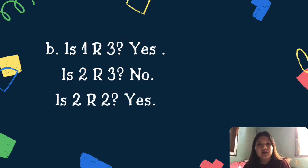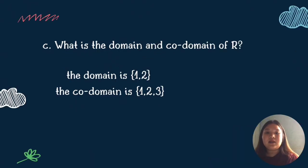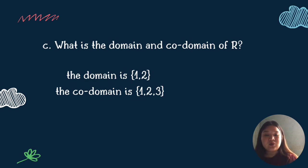Lastly, is two related to two? Yes. (2,2) is an element of R dahil with the same substitution process, integer ang lalabas, which is zero naman this time. What is the domain and co-domain of R? Based sa given, ang set A natin dito or yung tinatawag nating domain is yung {1, 2}, and yung set B naman na tinatawag nating co-domain is yung {1, 2, 3}.